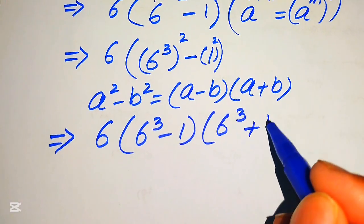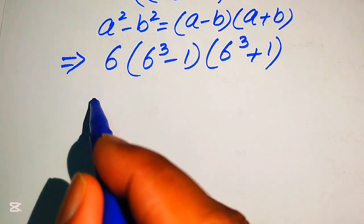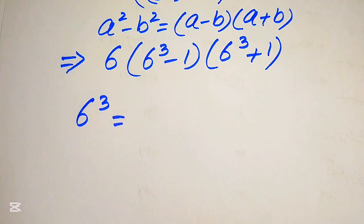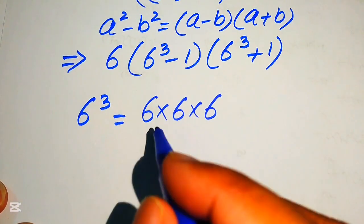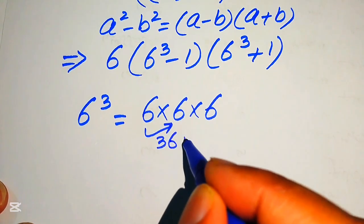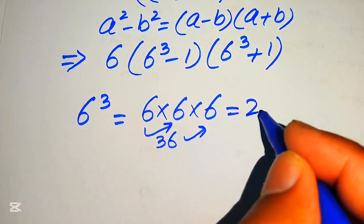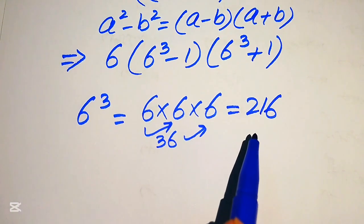Our target is now to find the value of 6 cubed. We know that 6 cubed means multiplying 6 three times: 6 times 6 times 6. First, 6 times 6 equals 36, and 36 times 6 equals 216. So 6 cubed equals 216.